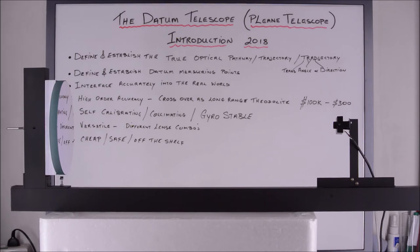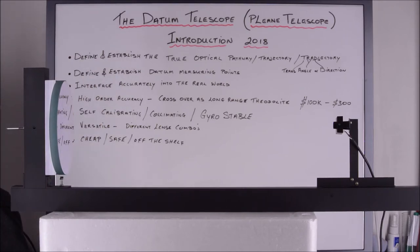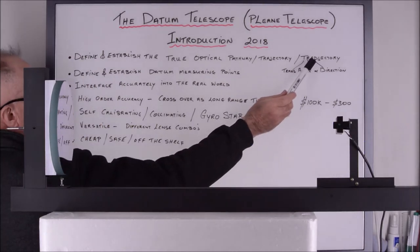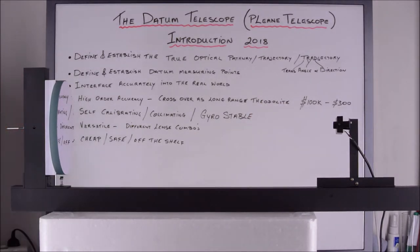So let's just move on now into some of the features of this telescope. The first one is defining and establishing this true optical pathway. But let's now start using this new word, trajectory, with a D.